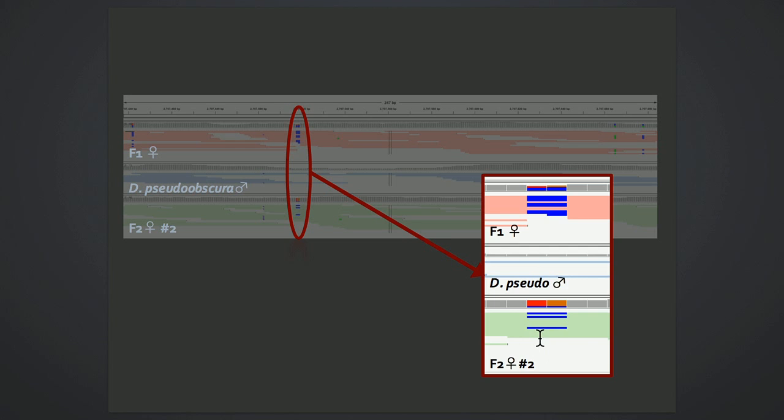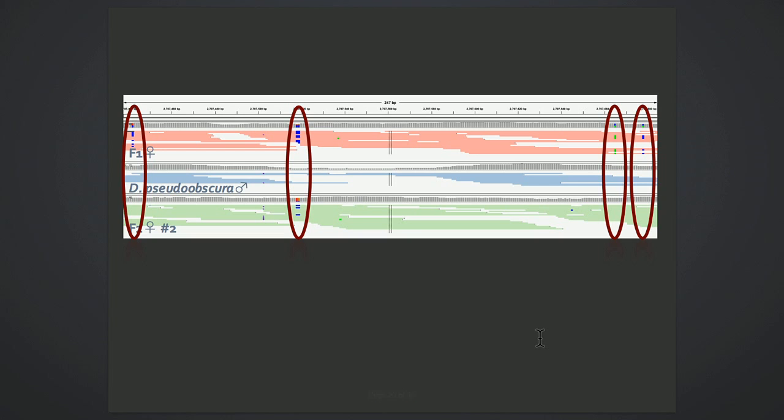And this becomes interesting when we look at the surrounding regions and see that at these flanking SNPs, so here's a SNP here, and here are two SNPs over in this region, the F2 female is homozygous. So this individual has inherited both possible alleles here but only one at the surrounding loci.